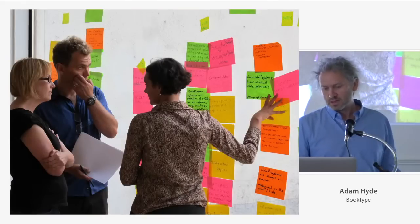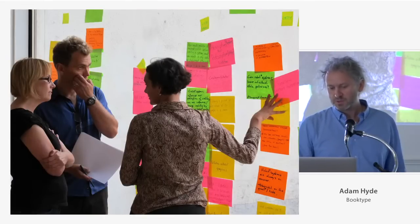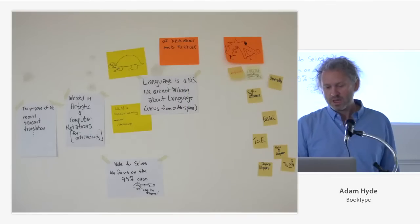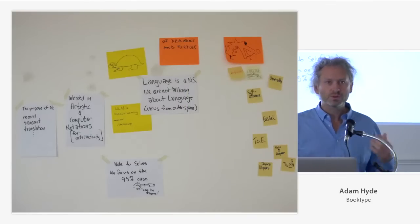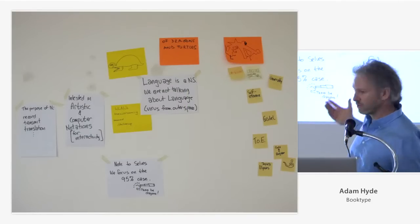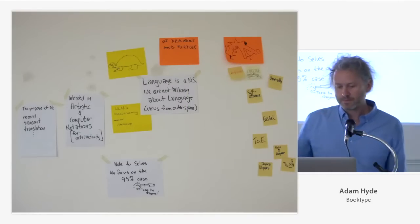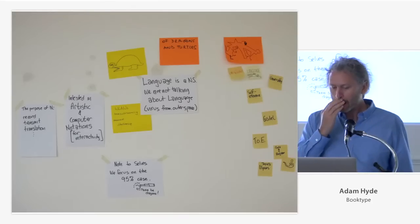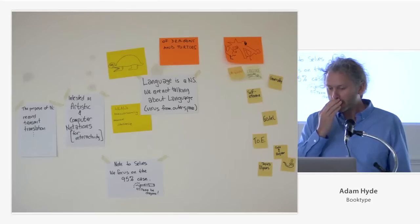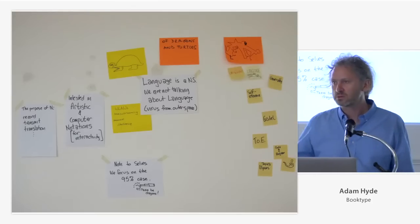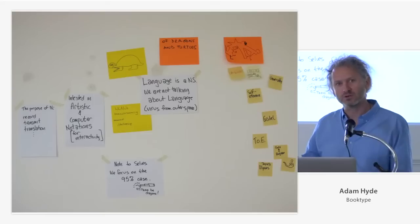This is the notation book sprint, talking about concepts. We also use drawings. This is a notation systems book sprint where we had dragons and turtles as the title.